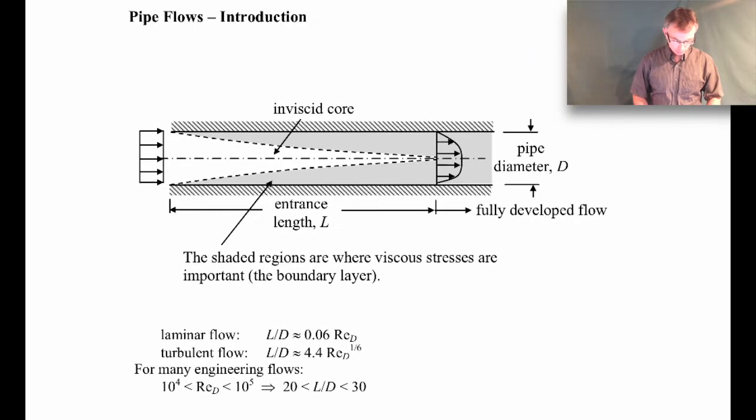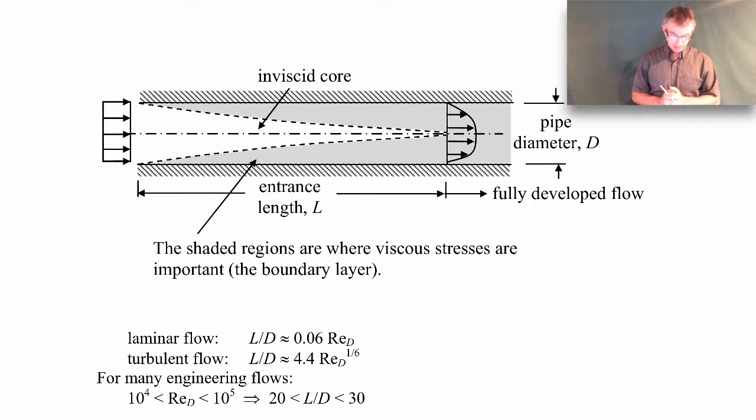We're going to focus specifically on fully developed pipe flow. So what I mean by that is, imagine we have an incoming flow that's uniform and it starts to enter into a pipe given by these walls here. We know from our previous lectures that we'll get the formation of a boundary layer that forms on the pipe walls. So the gray regions here are the boundary layer. The region in the middle is the inviscid core region where the velocity remains essentially uniform.